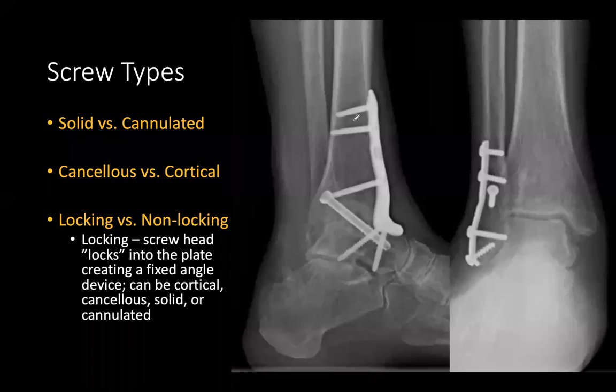The third category is locking versus non-locking. Locking screws go into plates. Non-locking screws can go directly through bone or through plates as well.